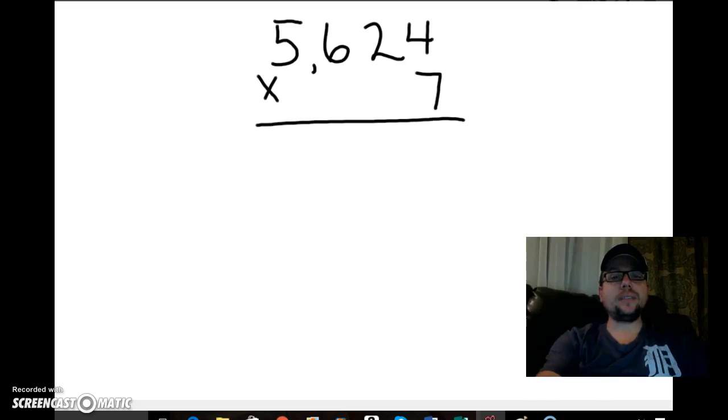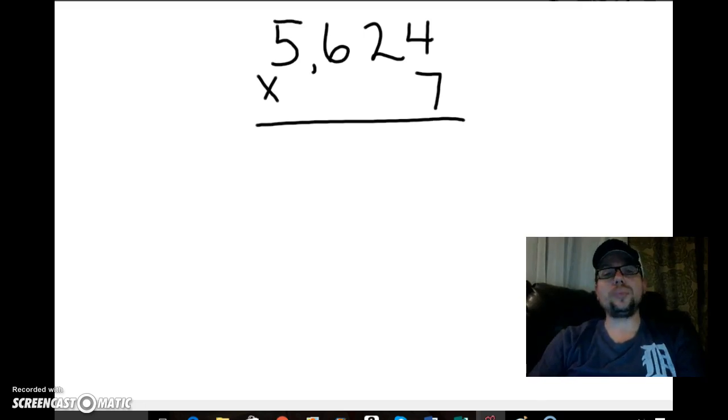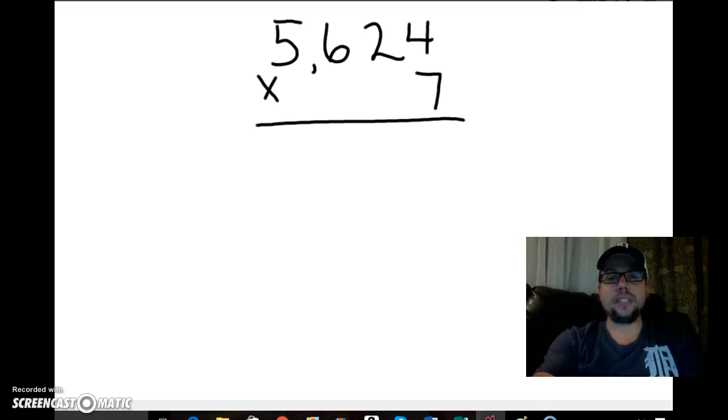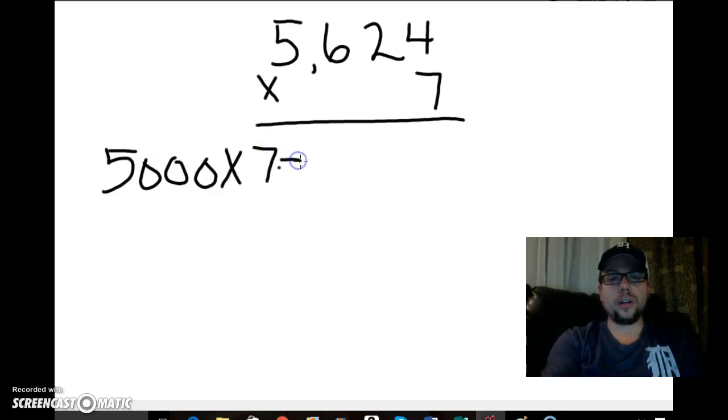So we're going to start out with 5,624 and we're going to use the expanded form of that to help us multiply this a little bit easier. So 5,624 is 5,000 plus 600 plus 20 plus 4. So over here I can set this up as a partial product equation.